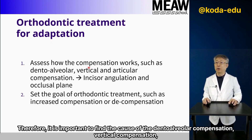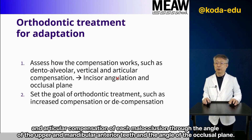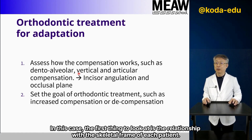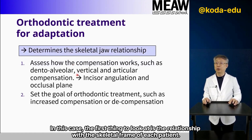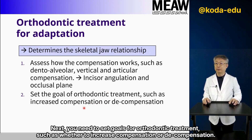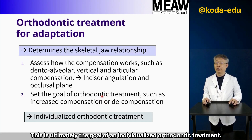Therefore, it is important to identify the causes of dental alveolar compensation, vertical compensation, and articular compensation in each malocclusion through the angles of the upper and lower anterior teeth and the occlusal plane angle. The first thing to evaluate is each patient's skeletal framework. You then need to set goals — whether to increase compensation or decompensation — which is ultimately the goal of individualized orthodontic treatment.